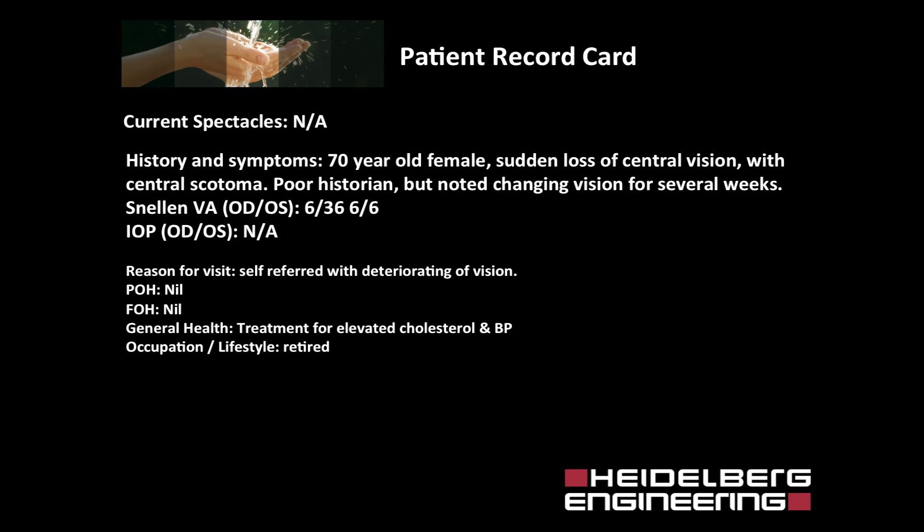A 70-year-old female presents to your practice with sudden vision loss and a central scotoma. The patient is a poor historian but had noted changing vision for several weeks. Snellen visual acuity is 6/36 right, 6/6 left, and intraocular pressures are normal.